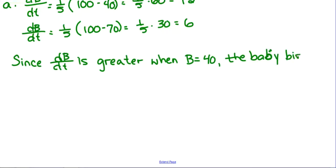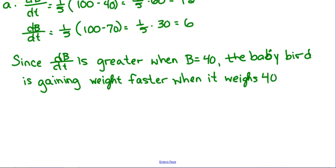So obviously that rate is faster. Let's just say it in words. Let's say since, since dB/dt is greater when B equals 40, the baby bird, the baby bird is gaining weight faster when it weighs 40 grams.